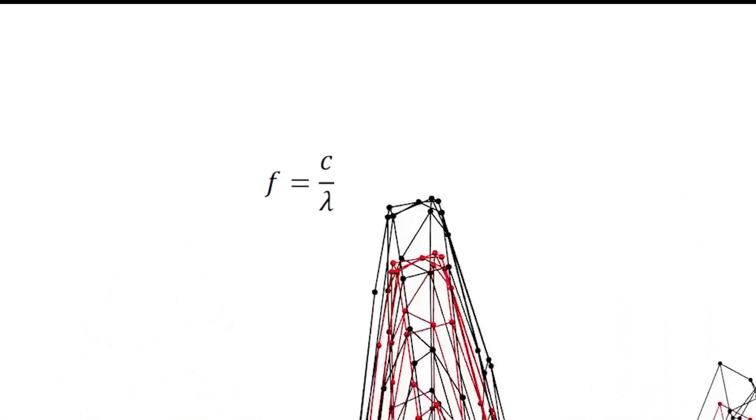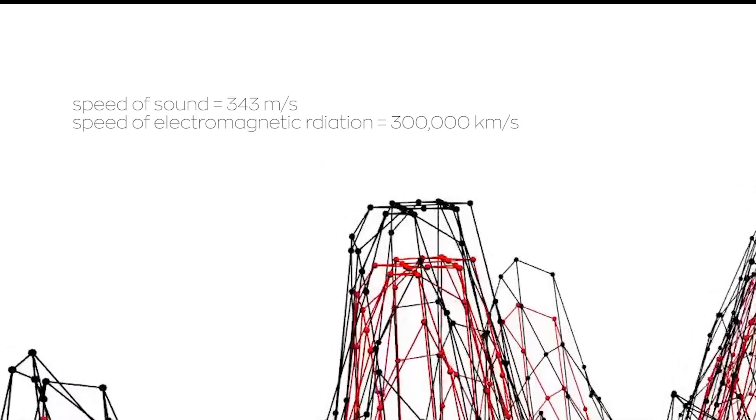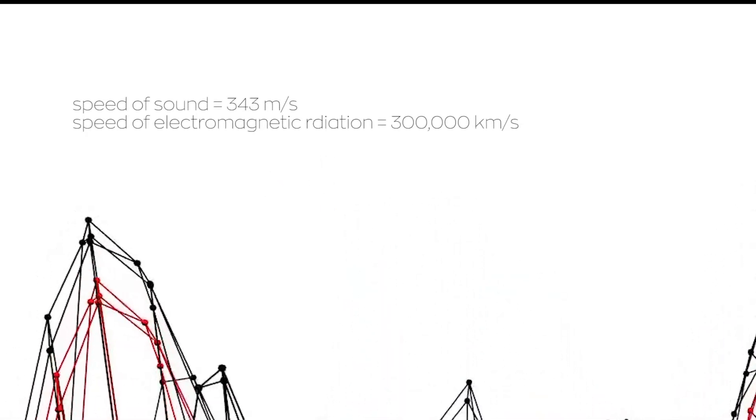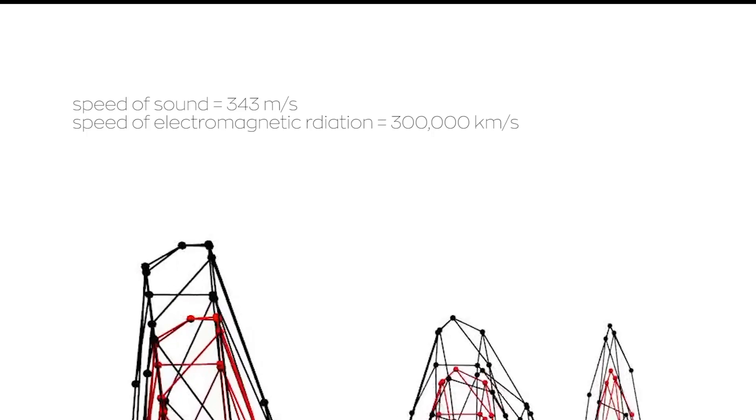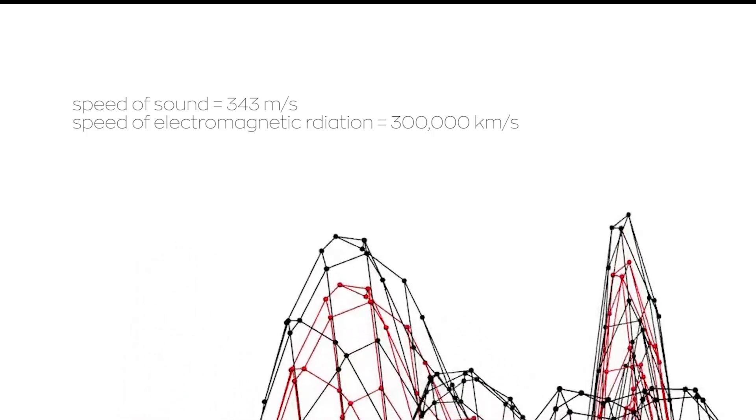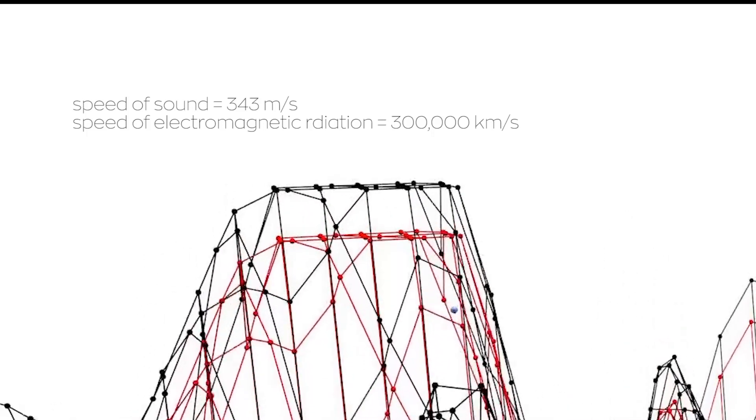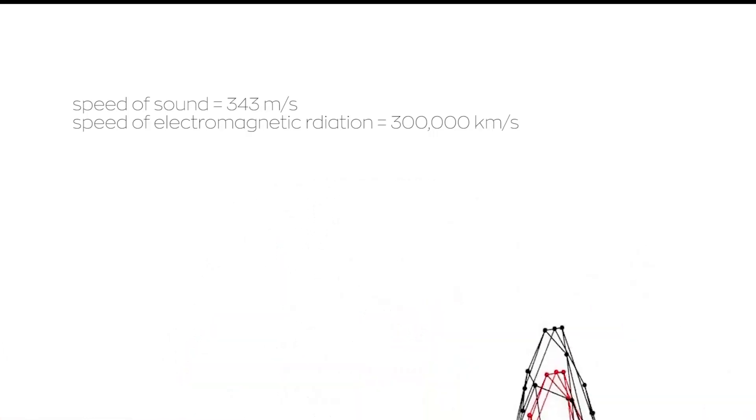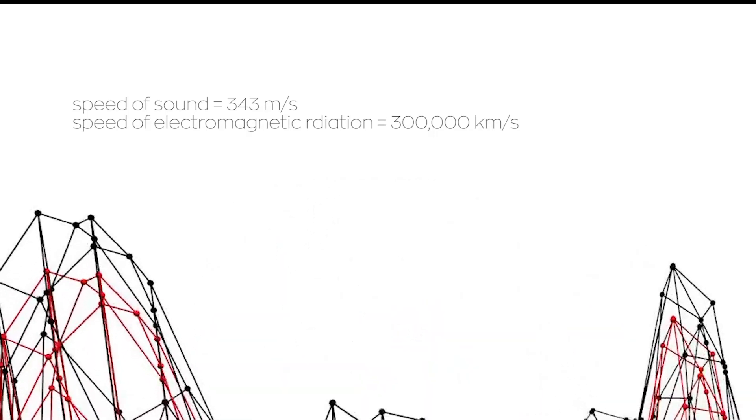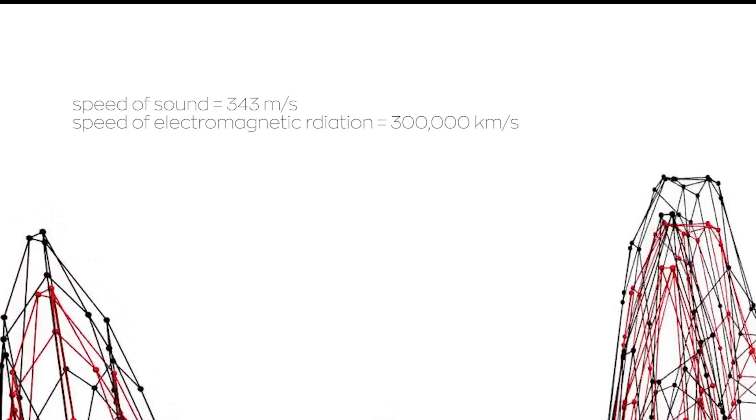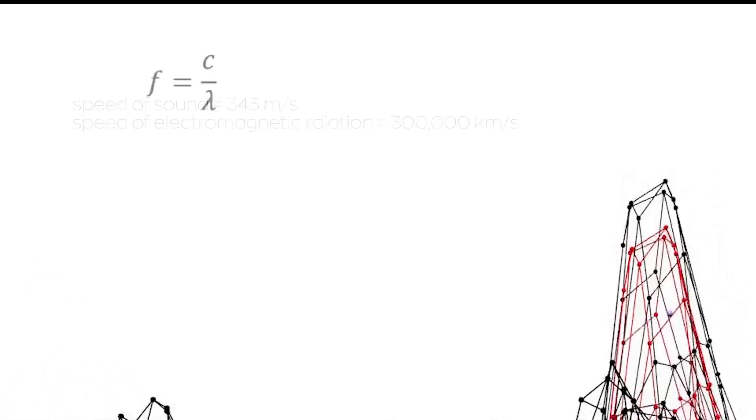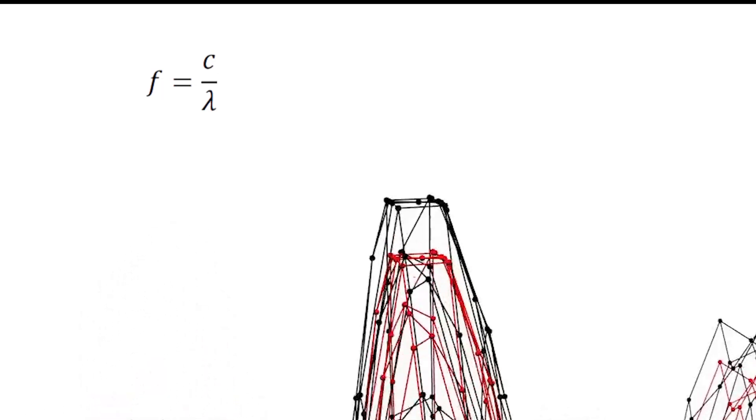The speed can take on many values. It can be 3 by 10 to the 8 meters per second if we are referring to the speed of light or electromagnetic radiation in general, and the speed of sound is about 343 meters per second. Both of these values vary depending on the conditions under which the waves are propagating. So calculating the frequency is just a simple matter of dividing speed by the wavelength.